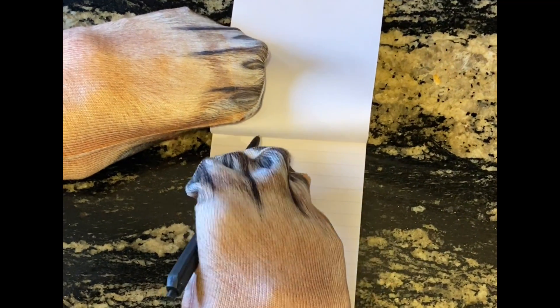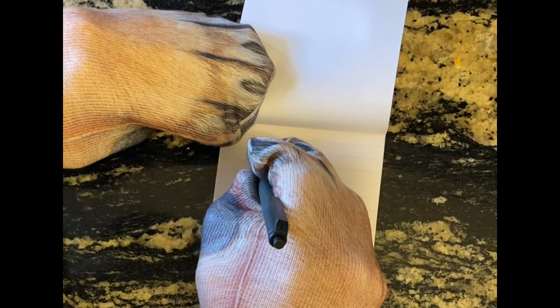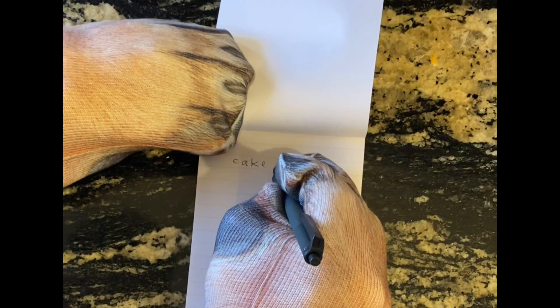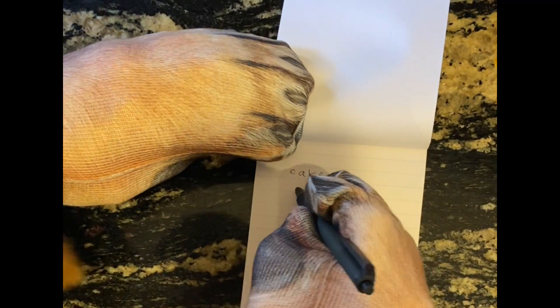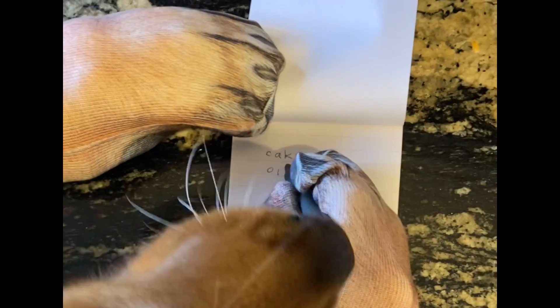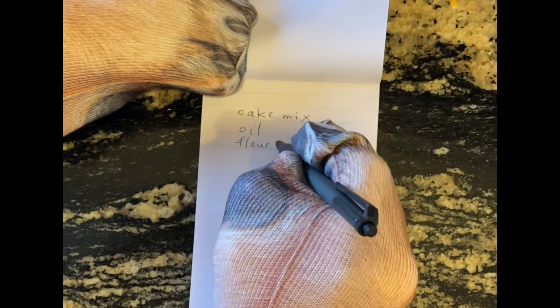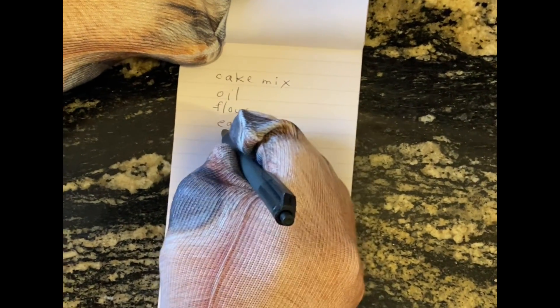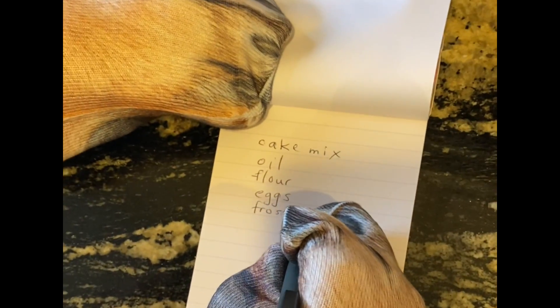All right, Honey Rose, you want to make a list of some things we need to get from the grocery store. So we got cake mix. Yep. Cake mix and oil, maybe some flour, eggs, frosting. Honey Rose, are you getting this down? Okay.